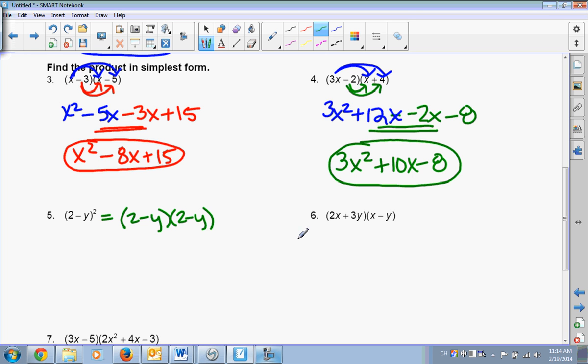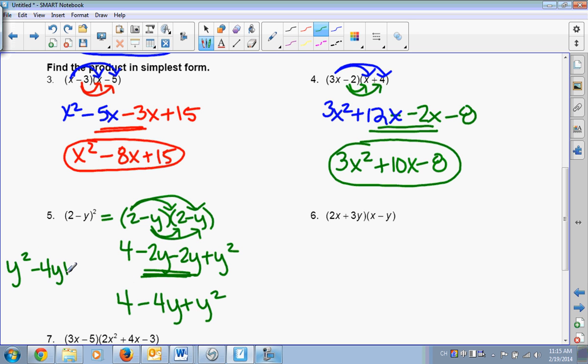So then, now you can distribute just like we have been doing. So 2 times 2 is 4. 2 times negative y, negative 2y. Negative y times 2, negative 2y. And negative y times negative y. Plus y squared. You have common terms in the middle again. Negative 2y, negative 2y is negative 4y plus y squared. Now, you might also see it written like this. Y squared minus 4y plus 4. These are equal to each other. Because I just went from biggest exponent to smallest. And this one was smallest to biggest exponent. They're both correct.